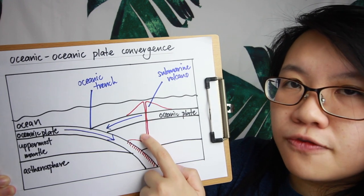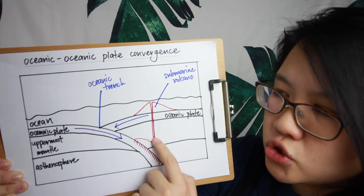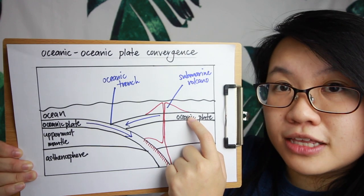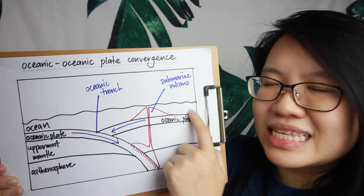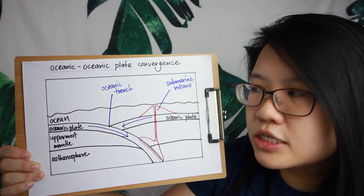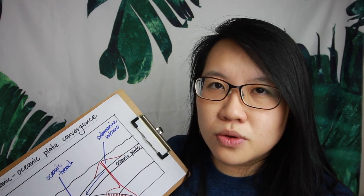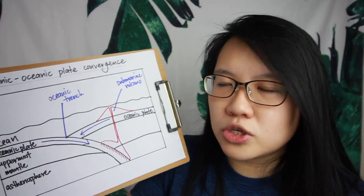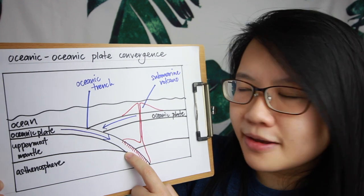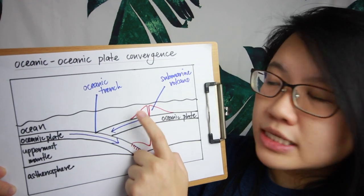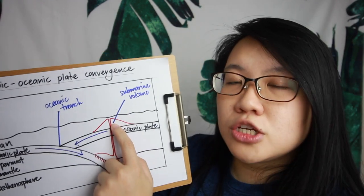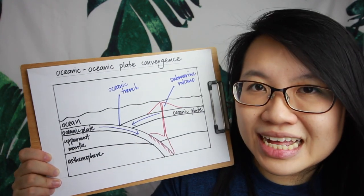Part of the subducted plate melts to form magma, which rises through cracks and fissures to form a submarine volcano on the overlying oceanic plate — the one that's less dense or slower-moving. If both plates are the same density, the faster-moving plate subducts. Due to multiple volcanic eruptions, the submarine volcano can rise above the surface of the water, forming a volcanic island.